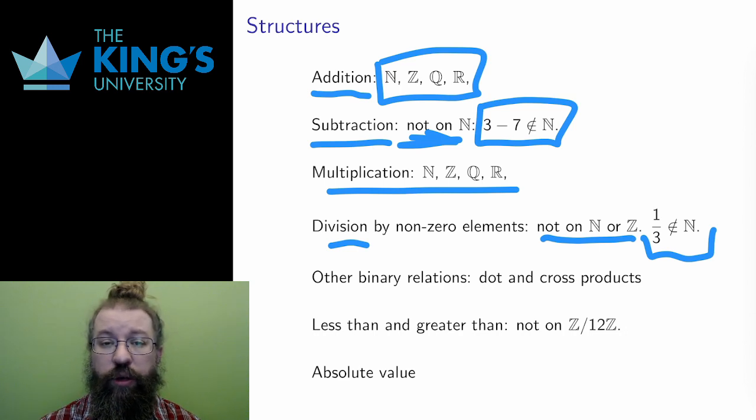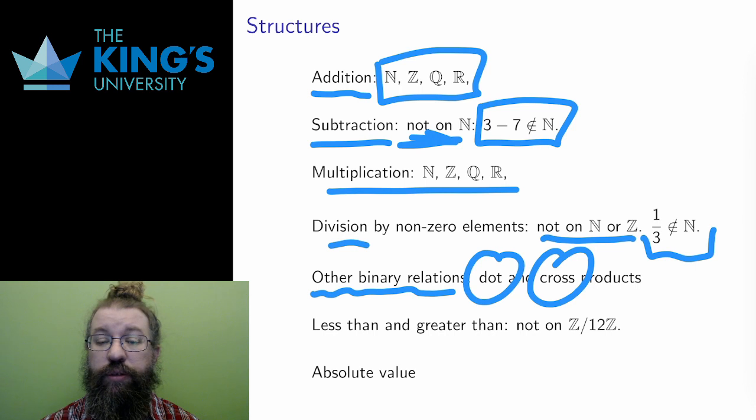Those were four binary relations. I defined two new binary relations in the videos this week, the dot product and the cross product. The dot product is a structure on any R^n, and the cross product is a structure specifically on R^3.